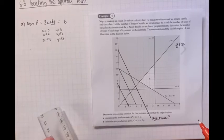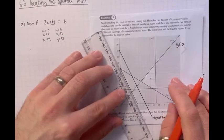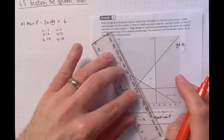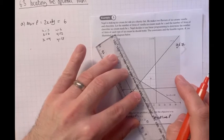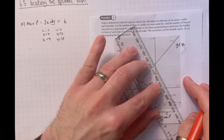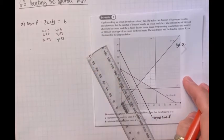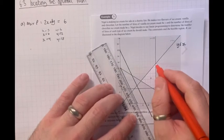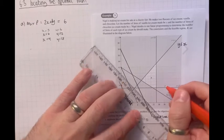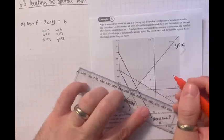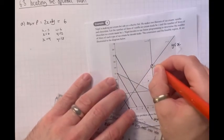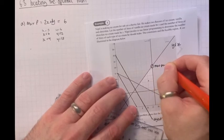Take your ruler, pass it through the feasible region keeping the gradient the same. The first point you hit will be a minimum solution. The last point you hit will be a maximum solution. Because this question was to maximise, it was fairly obvious it was going to be this point here. So that's the max point for P.